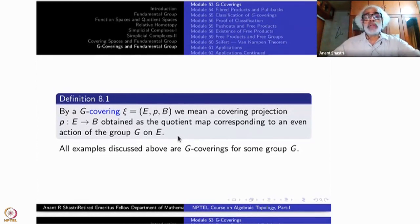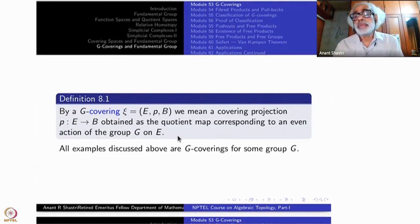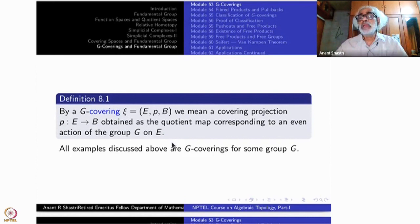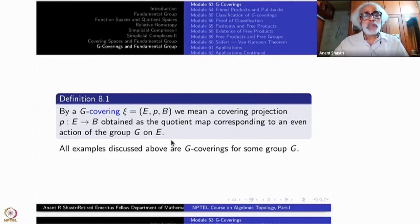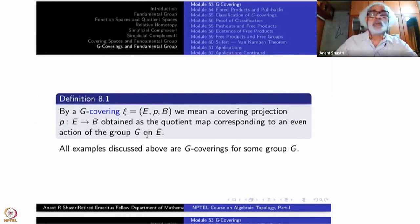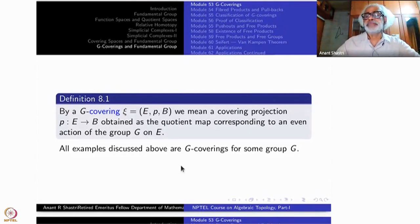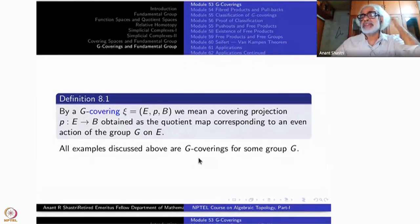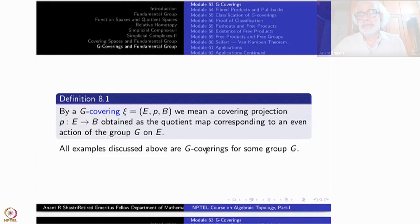We have already seen that whenever a group G acts evenly on a topological space through diffeomorphisms, the quotient map is a covering projection. So far we have been studying covering projections without much regard to the group action. Now we want to bring the group action to the forefront. In principle, all the examples that we have discussed are G-coverings — they come out of the action of a group.